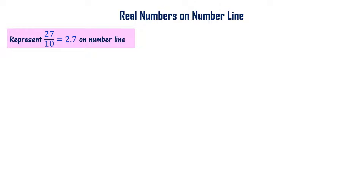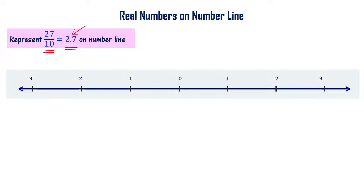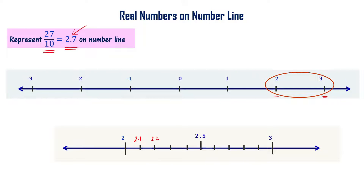Represent 2.7 on the number line. 2.7 is 27/10, which is a rational number, and its decimal expansion is a terminating decimal. 2.7 lies between 2 and 3 on the number line. So we magnify that particular portion of the number line between 2 and 3, dividing it into 10 equal parts: 2.1, 2.2, 2.3 ... up to 3. Now we can see 2.7 on the number line.